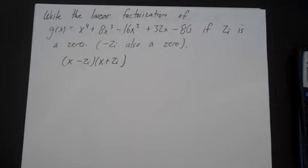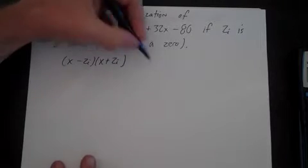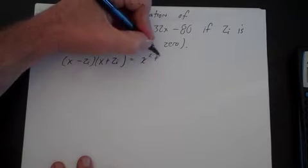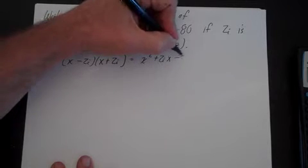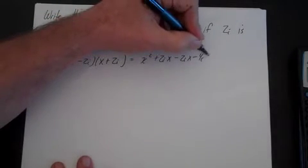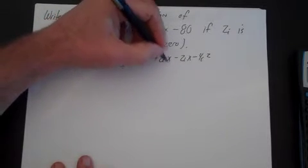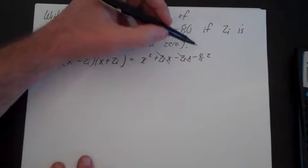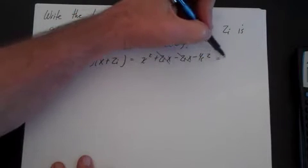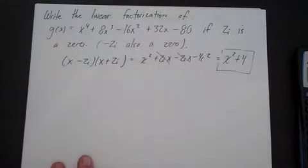If both of those are factors, we can multiply them out. If we FOIL that out, we get x² + 2ix - 2ix - 4i². The 2ix terms cancel, and i² equals -1, so x² + 4 is also a factor.